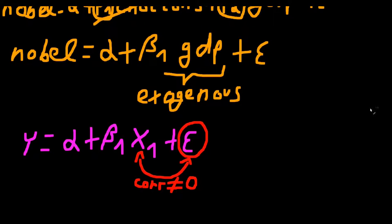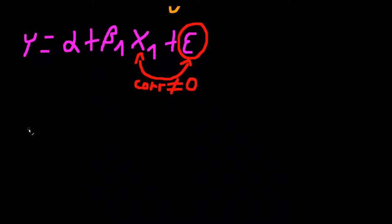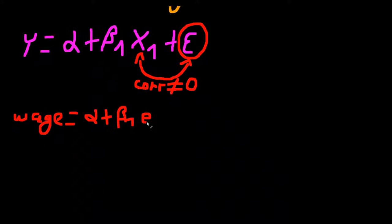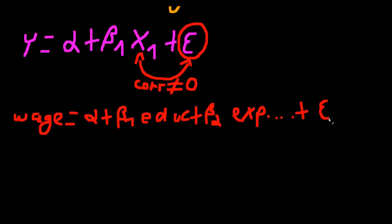So let's say, for example, you want to explain wages. And you say, okay, we have wage is equal to alpha plus beta_1 and you include education, for example, and you put in beta_2 times experience, also very important. And so on. And of course, you include an error term.